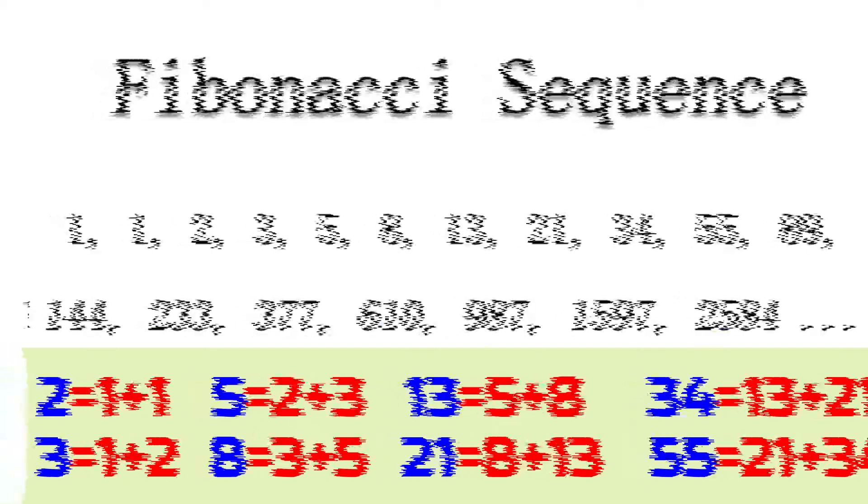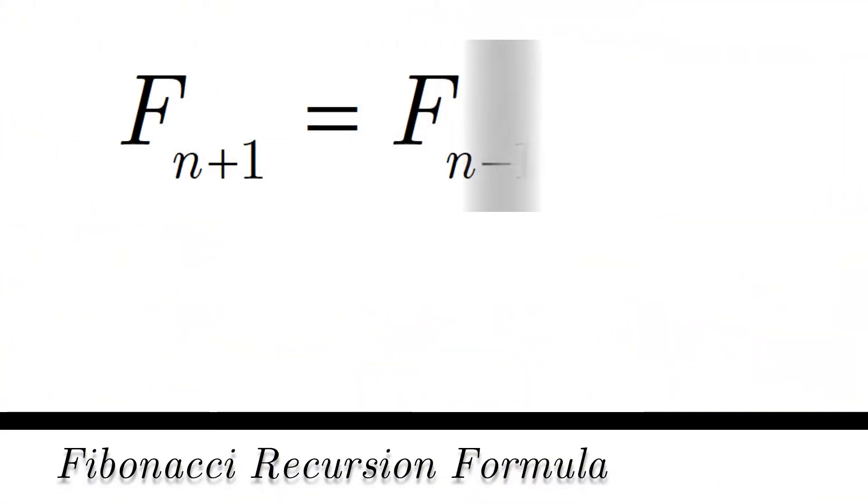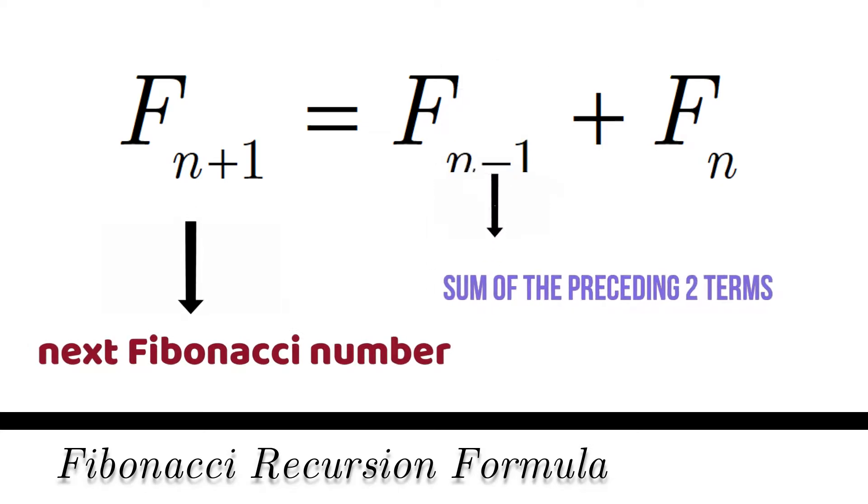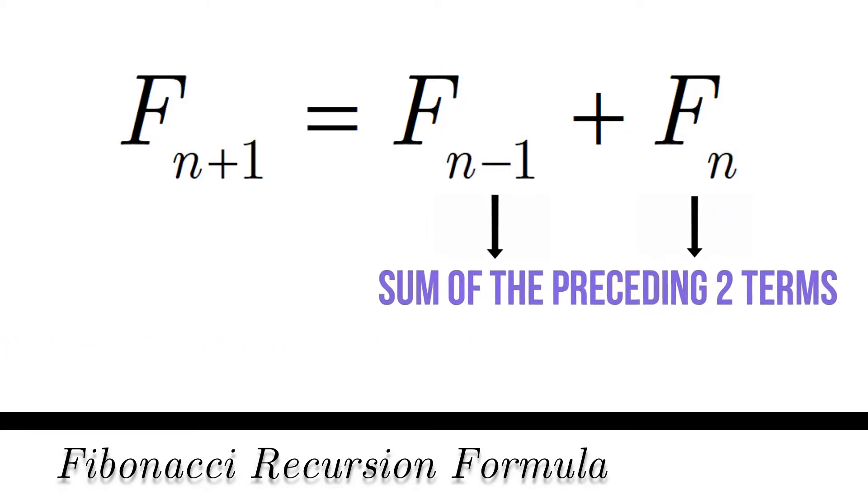And we can write that as an equation: F sub n+1 equals F sub n-1 plus F sub n. This recursion relation gives the next Fibonacci number as the sum of the preceding two numbers.